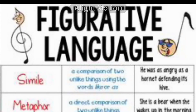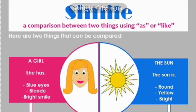Simile and metaphor. A simile is a comparison between two things using 'as' or 'like' — there will always be the word 'as' or 'like'. For example: 'Her smile is as bright as the sun,' or 'Her smile is bright like the sun.'